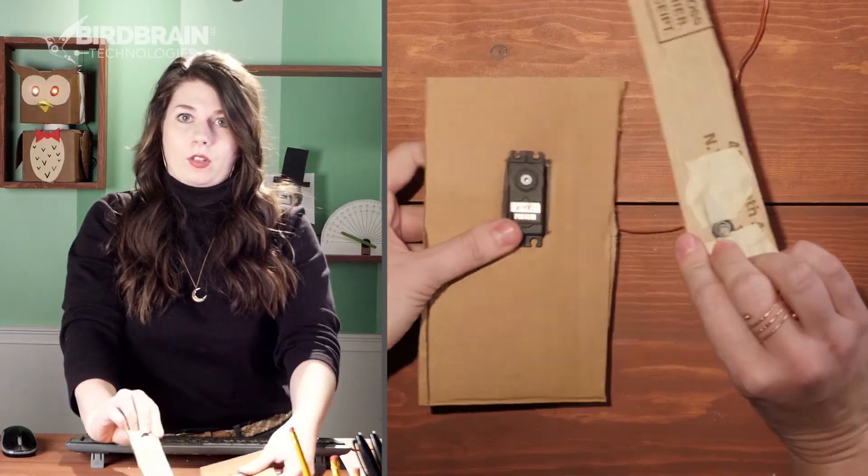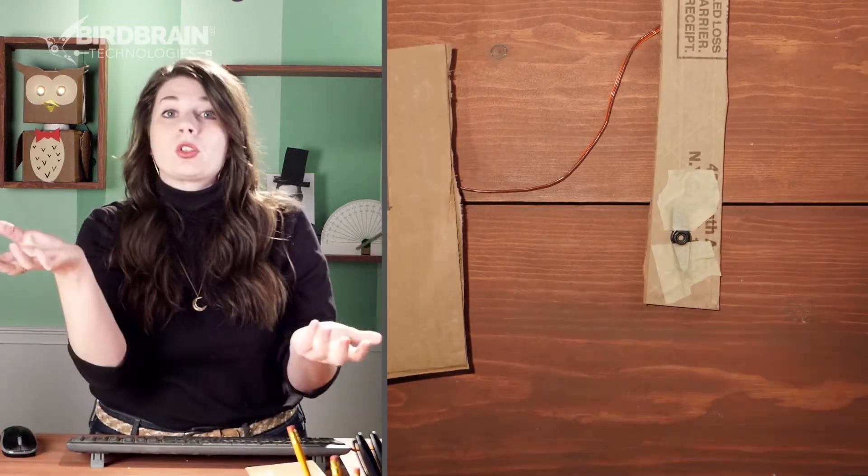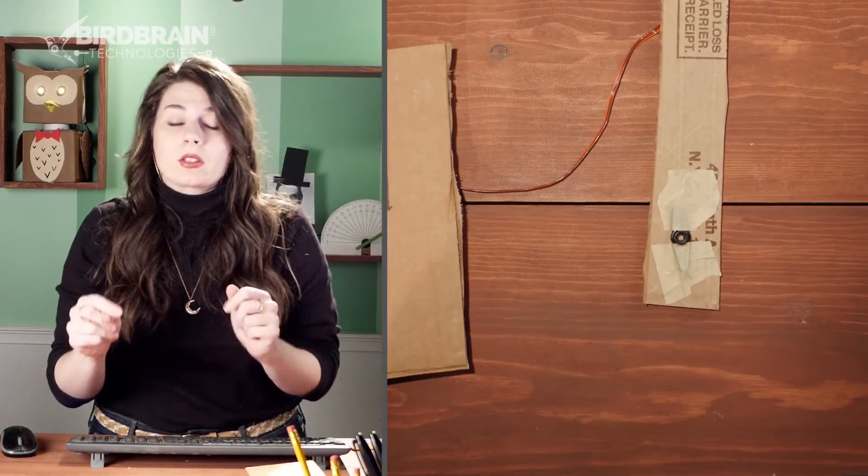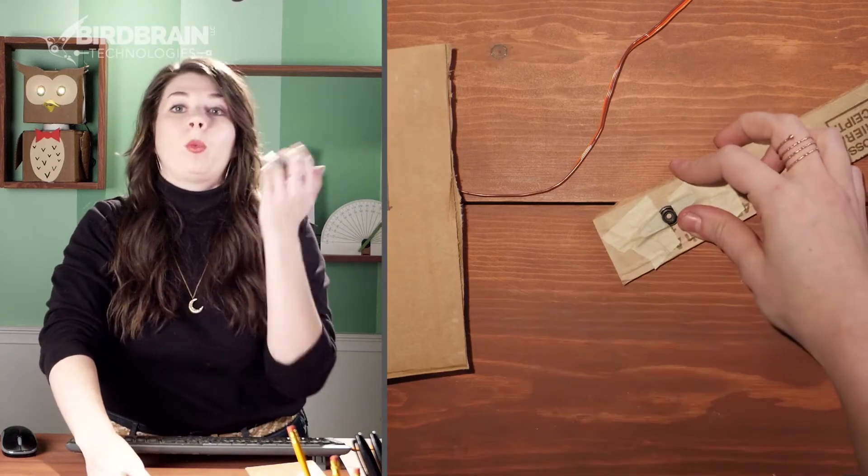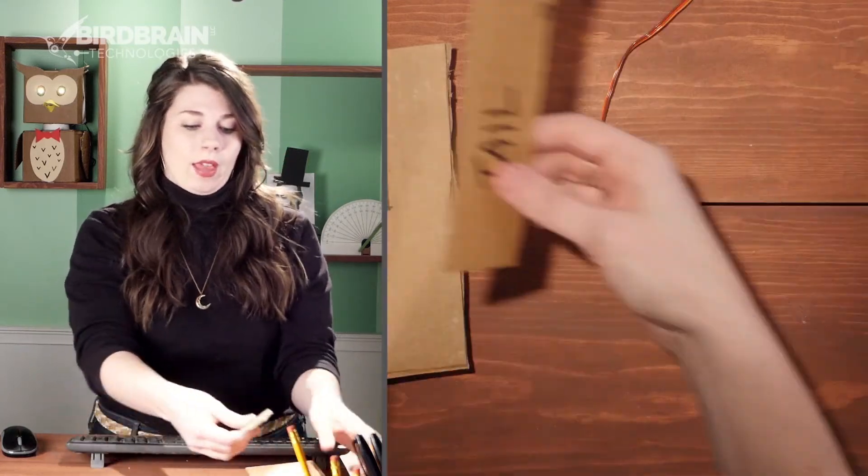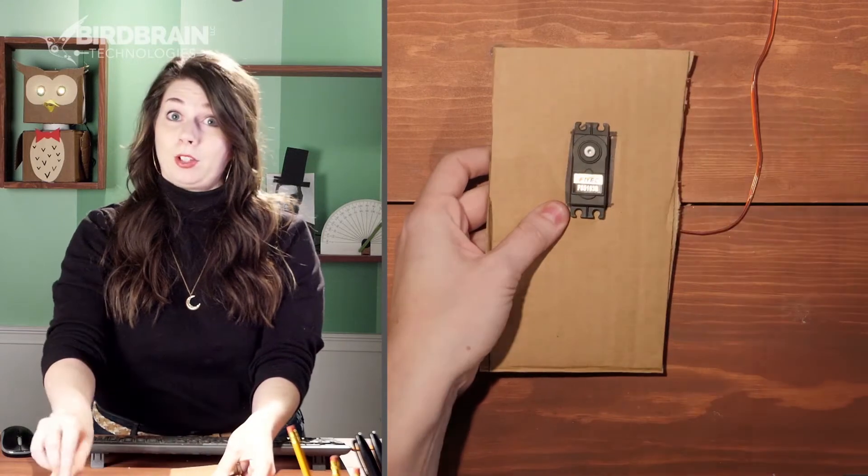So I just popped the servo horn off here. And you see the servo horn, I use the one with two wings on it, whatever, any shape will work. I just taped the wings down, and then that will pop right on and off your motor there.